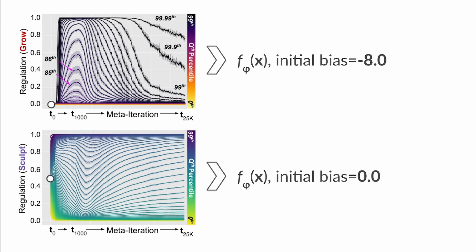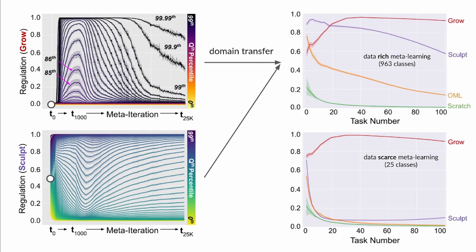Next, under domain transfer to ImageNet, we find that the regulator which was forced to grow weights in the classifier significantly outperforms competing methods, including the original OML algorithm and a neural network trained from scratch.